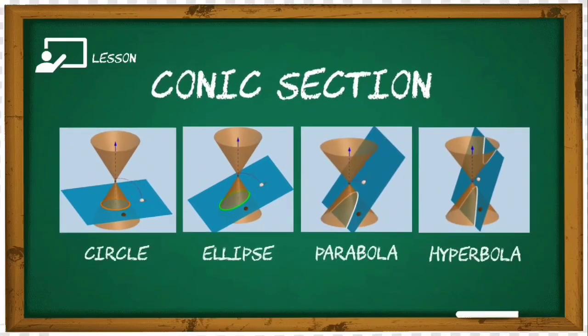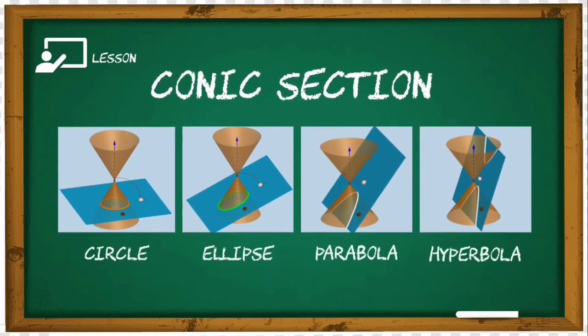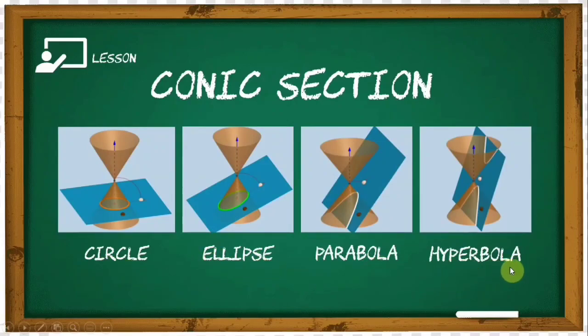In fact, we have four different types of a conic section, namely the circle, ellipse, parabola, and hyperbola.